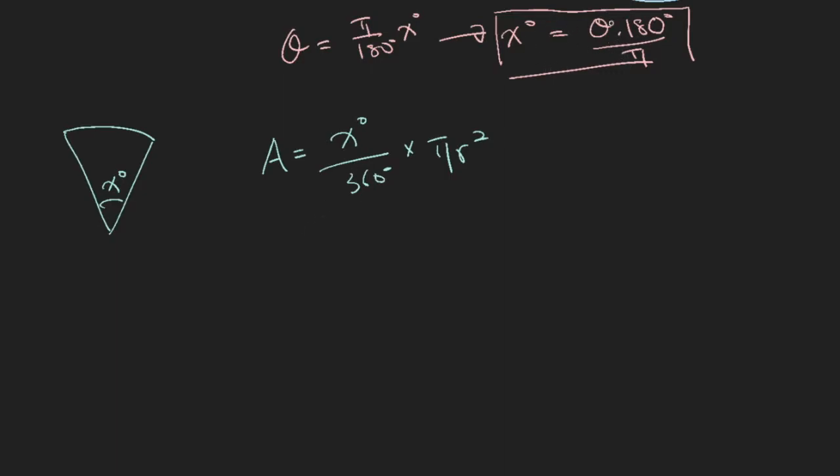So above, you have already found out that if you want to convert X degree to radian, it will be this. So let's throw this in where theta is in the radian mode. And you will have 180 degrees times theta in radian mode, divided by pi, and divided by 360 here, times pi R square.